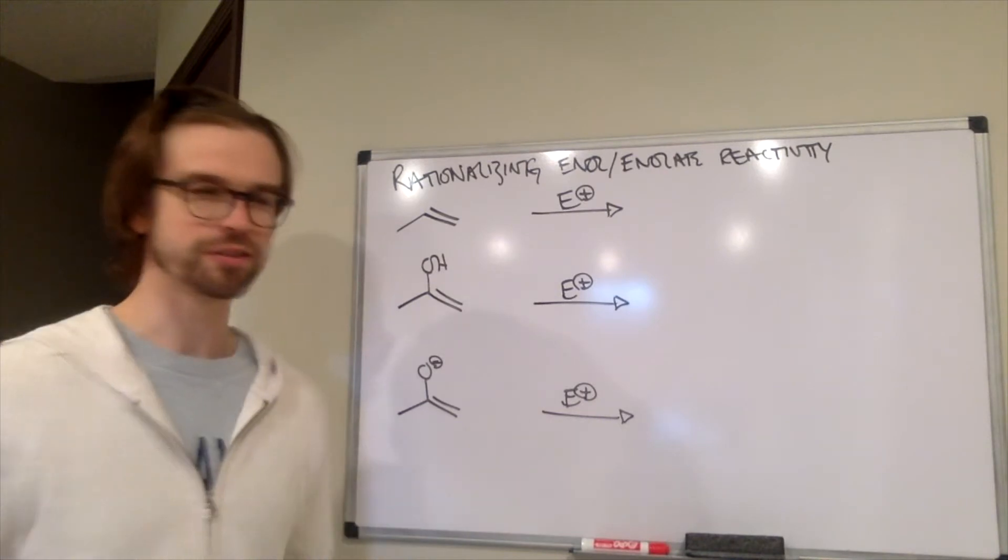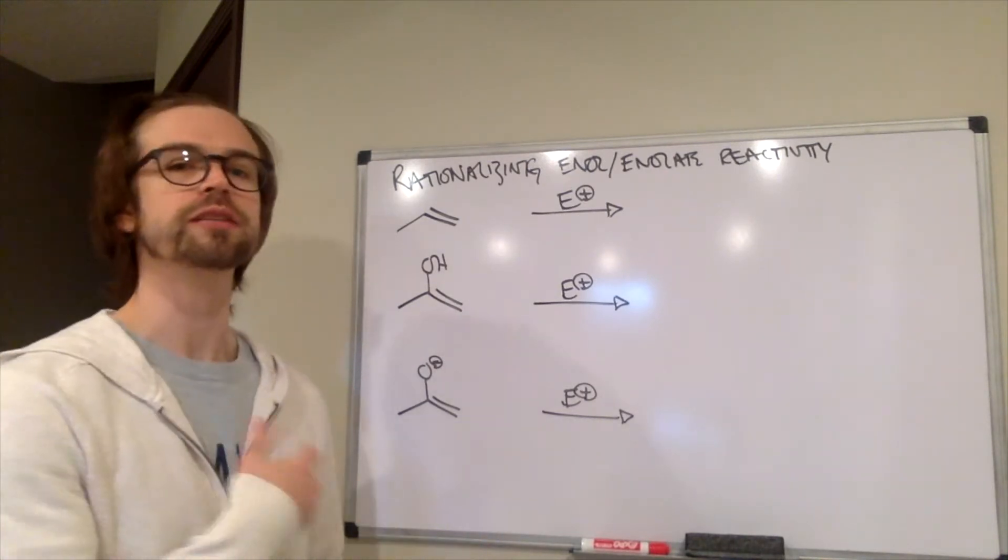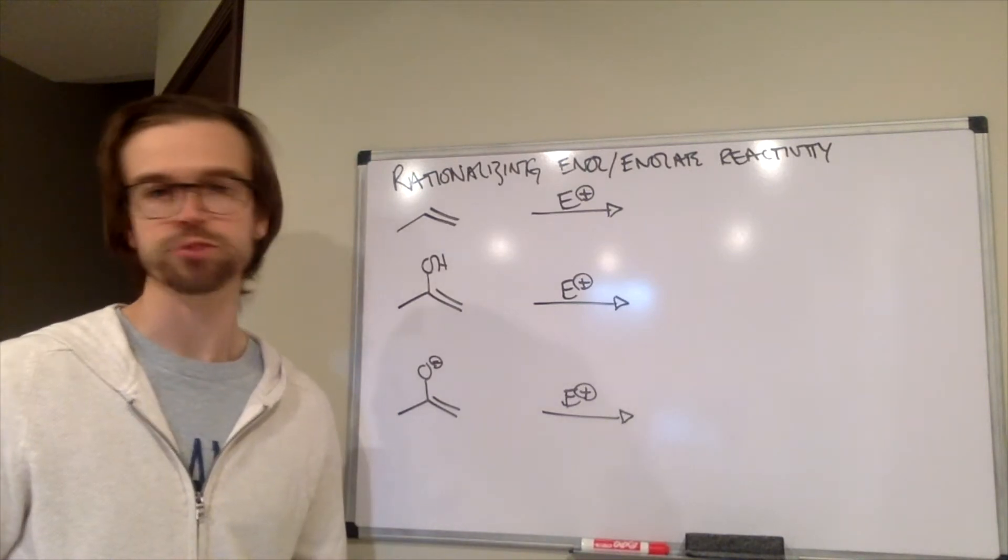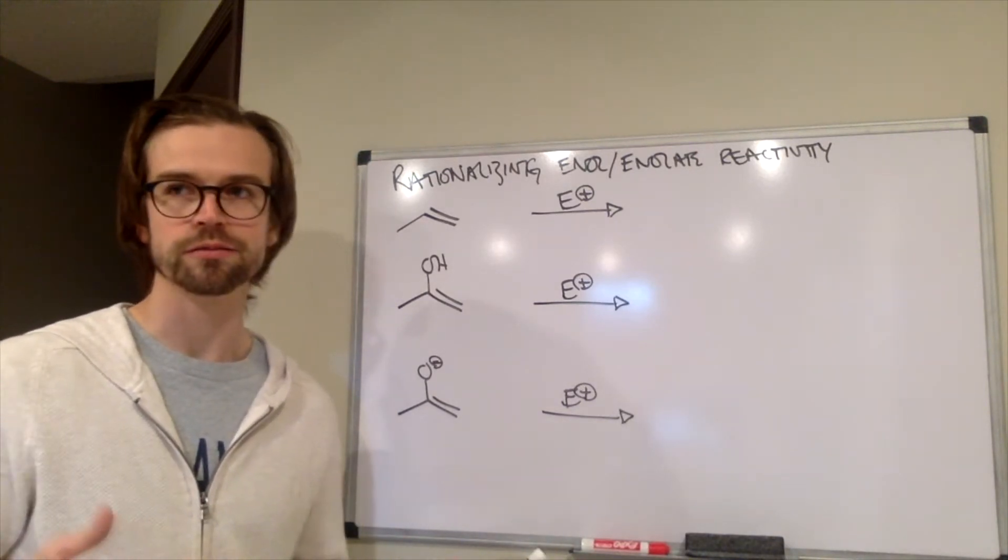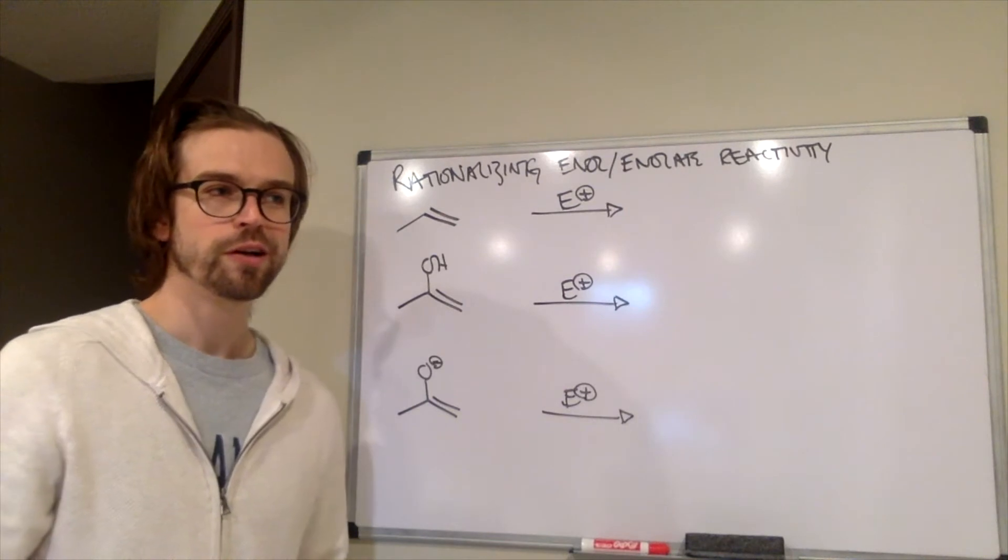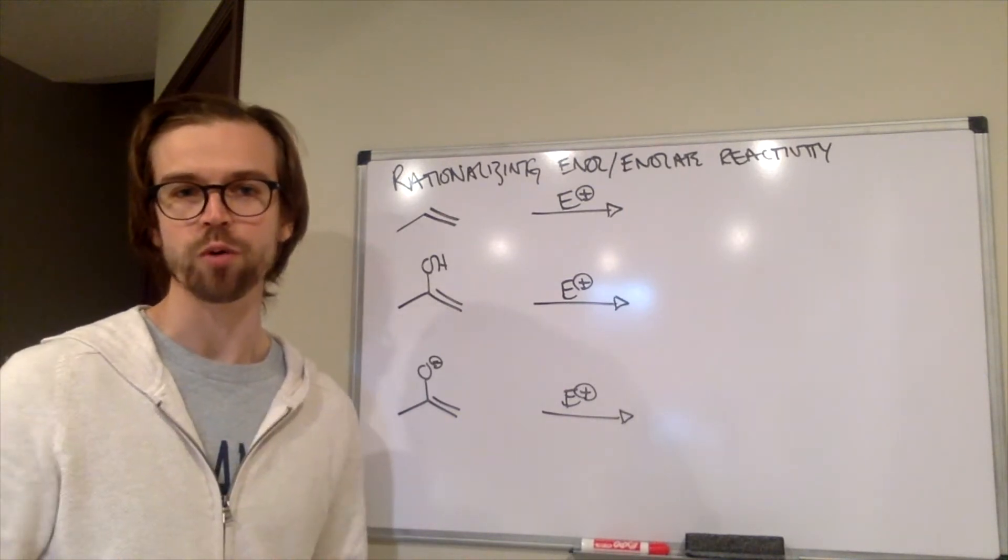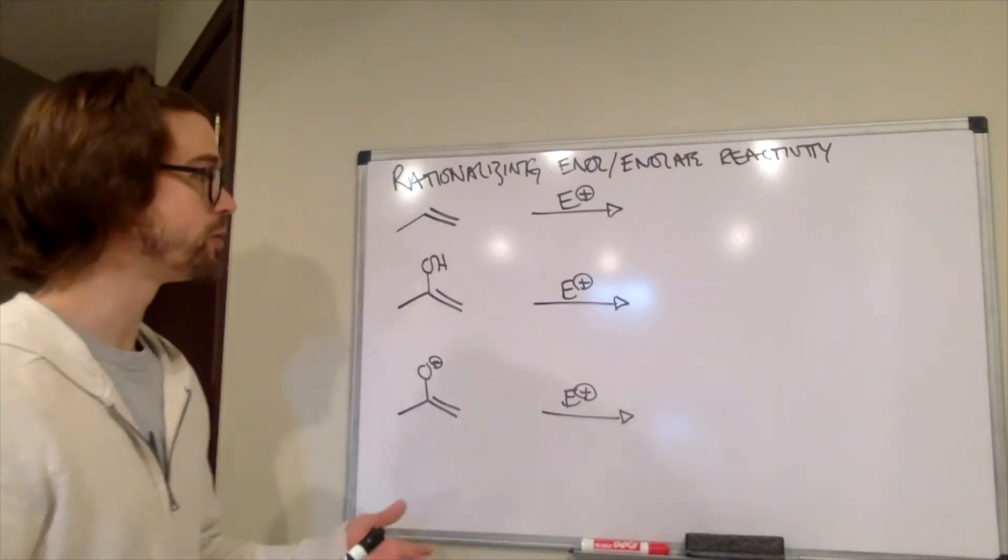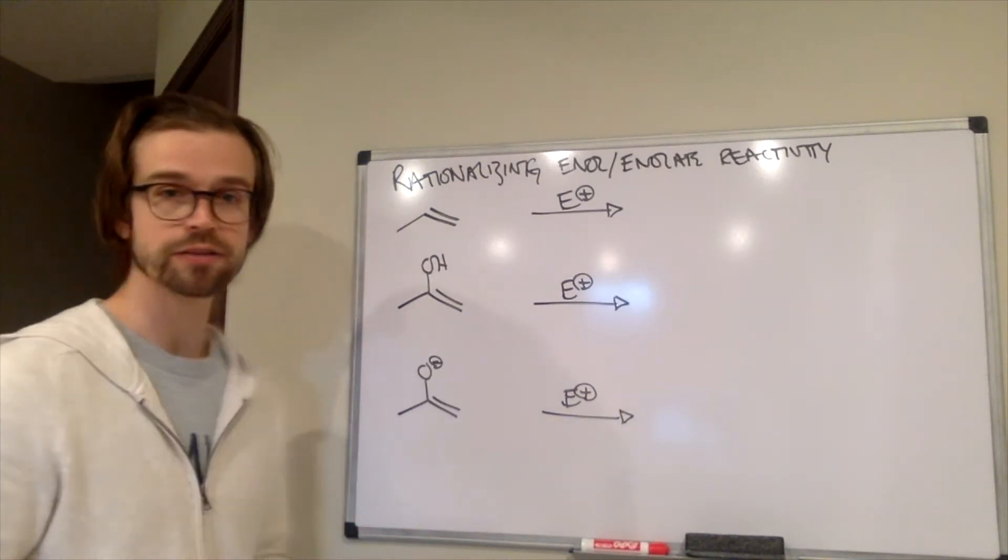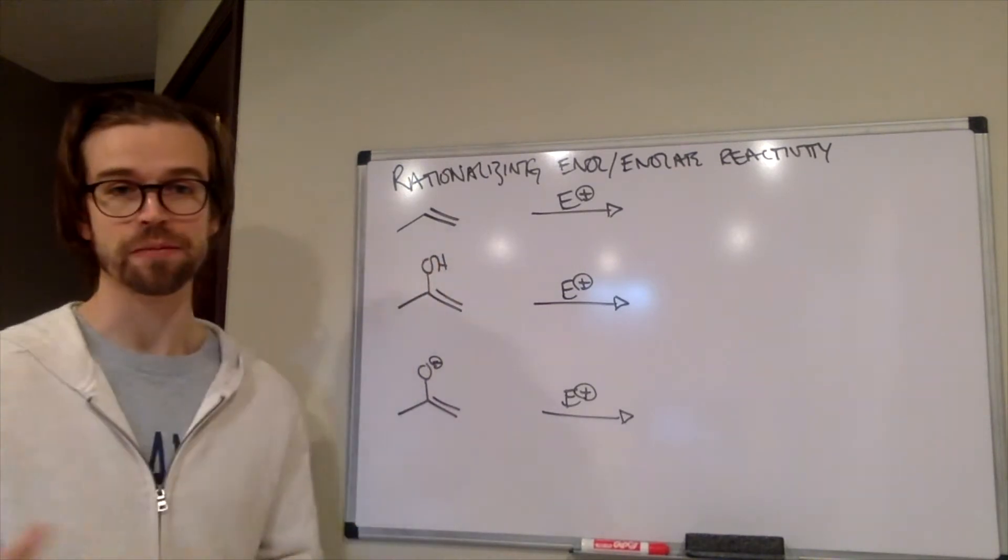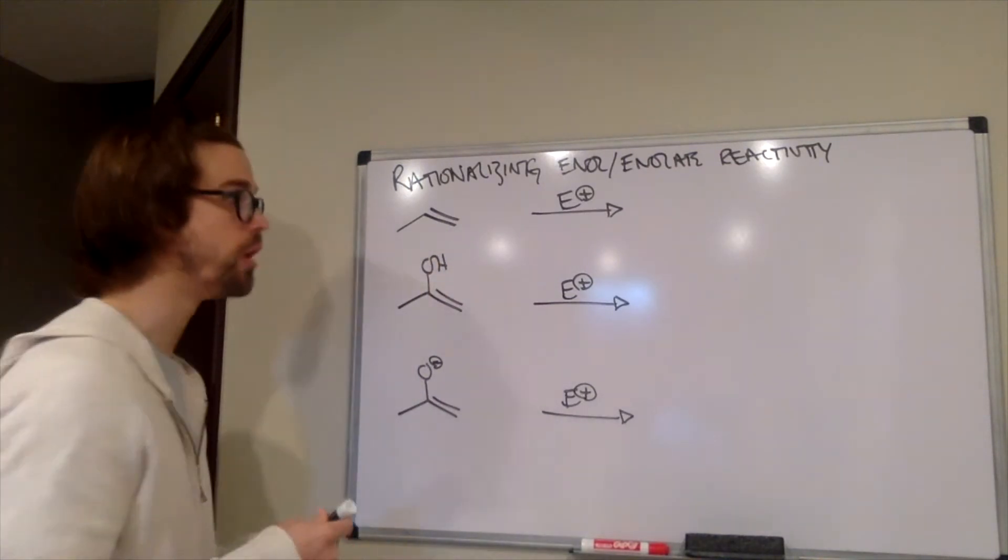And what I wanted to do is not just go straight to the enolate, straight to the enol. Let's start with things that we've known so far. Because really we want to learn about these things in the context of what we already know. So what was the first thing we added electrophiles to? The first thing we added electrophiles to were pi bonds. This happened way back in chapter 10 of organic chemistry one.